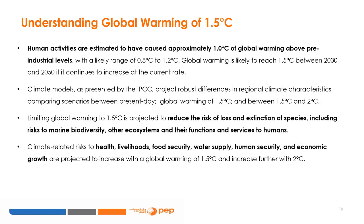Human activities are estimated to have caused approximately 1 degree Celsius of global warming above pre-industrial levels, with a likely range of 0.8 to 1.2 degrees Celsius. Global warming is likely to reach 1.5 degrees Celsius between 2030 and 2052 if it continues to increase at the current rate. Warming from anthropogenic emissions will persist for centuries to millennia. Climate-related risks for natural and human systems are higher at 1.5 degrees Celsius than at present, but lower than at 2 degrees Celsius, depending on the magnitude and rate of warming, geographical location, levels of development and vulnerability.